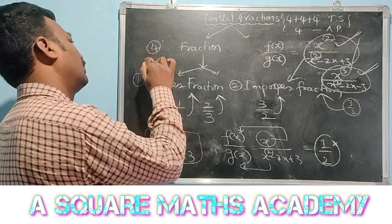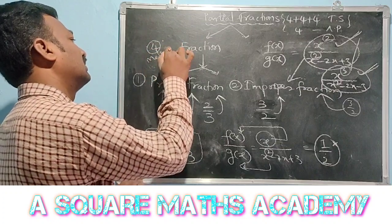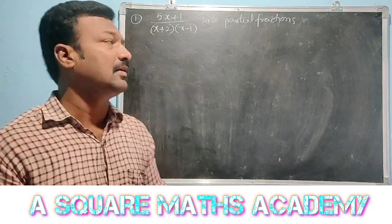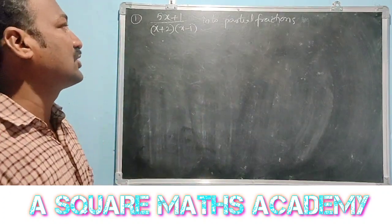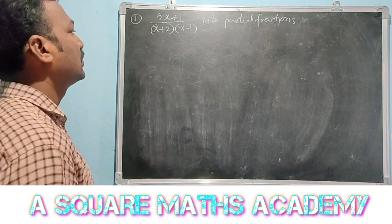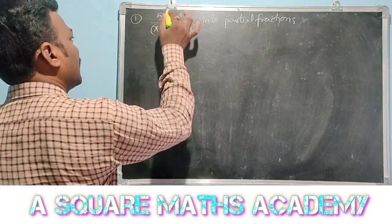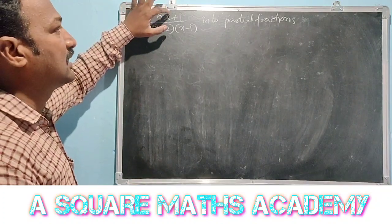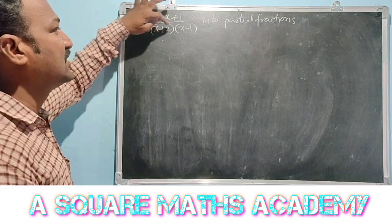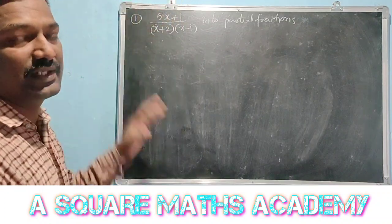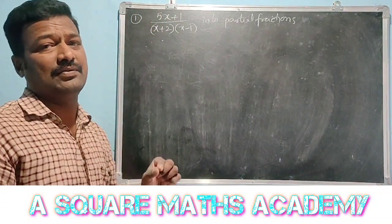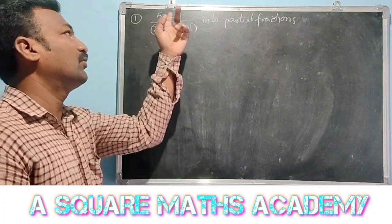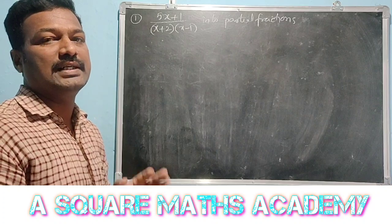Now let us start the class. First problem: resolve 5x plus 1 by (x plus 2)(x minus 1) into partial fractions. The degree of f of x is 1. The degree of g of x — multiplying x by x gives x squared — so the degree of g of x is 2. Therefore, degree of numerator is less than degree of denominator, so this is a proper fraction.